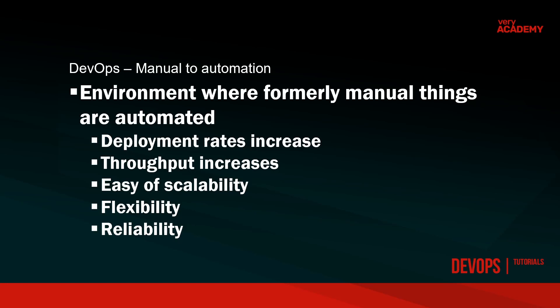We're talking about building, developing, testing, and deploying a piece of software, but ultimately taking any manual process and automating it. With DevOps, we're in the business of automating as much of this process of building and deploying an application as we can. The benefits of automating this process include increased deployment rates — the more we automate, the quicker we can deploy updates. Therefore throughput increases, and we get ease of scalability, flexibility, and reliability.